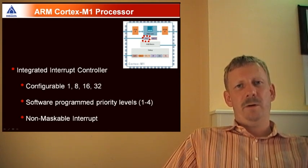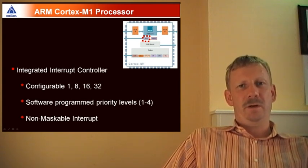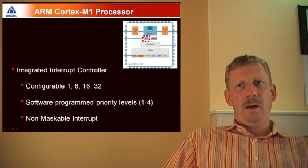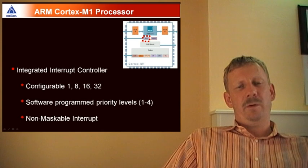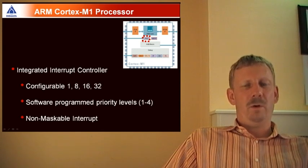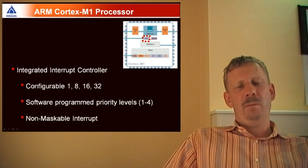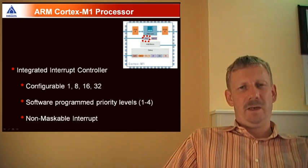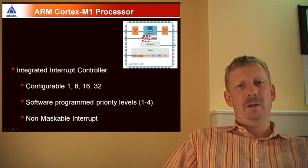For the Cortex-M1, it can be configured to have either one, eight, sixteen, or thirty-two interrupts. It's software programmable, so you can have software levels. For the Cortex-M1, you can have four levels, so you have two bits available for this. For the first time, ARM has implemented for the Cortex-M architecture a non-maskable interrupt.